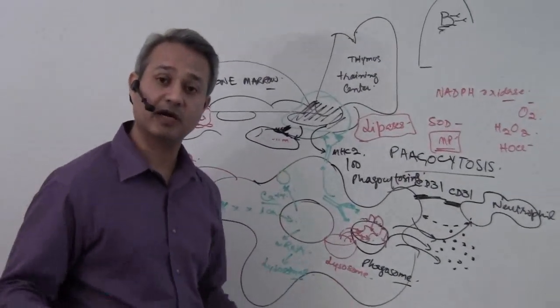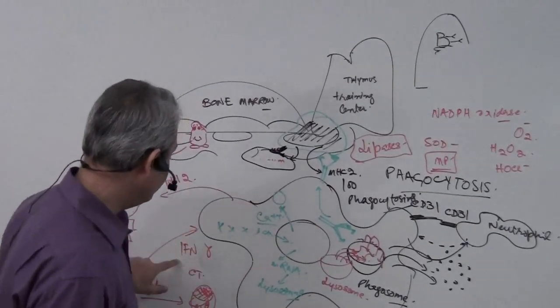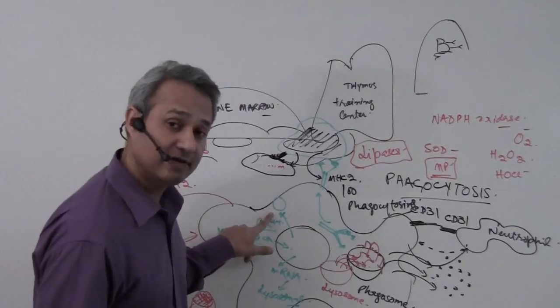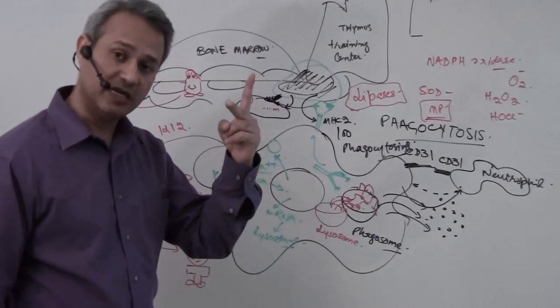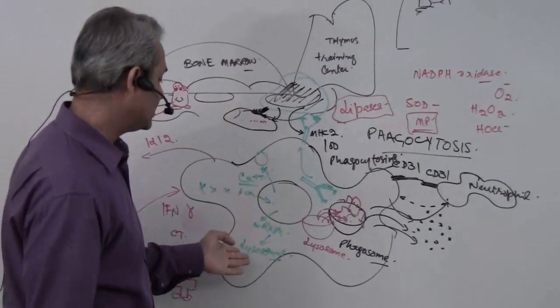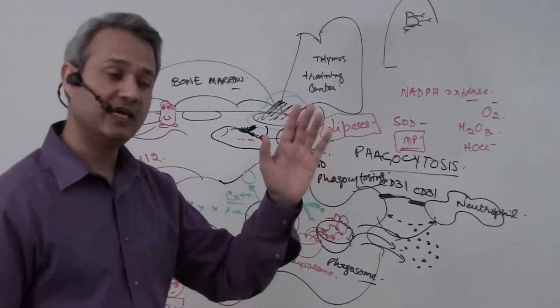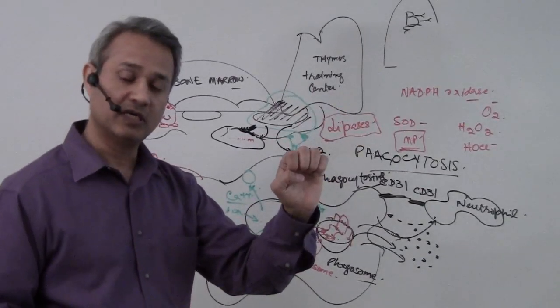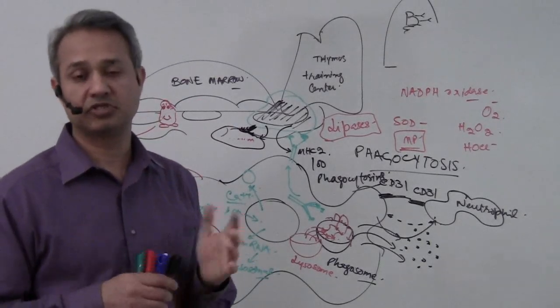So we keep reading about, hey, macrophage is activated. What does that mean? When a macrophage is activated via the interferon gamma, there is increased phagocytosis. There is increased presentation, antigen presentation. And of course, there is increased digestion. So we can put it in order and say, increase phagocytosis, increase digestion, and increase antigen presentation. Simple.